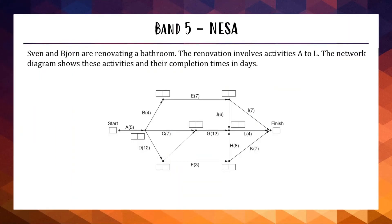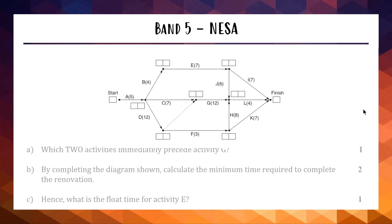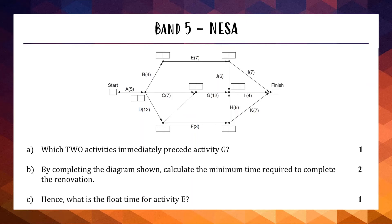We're up to the band 5 one. We've got Sven and Bjorn are renovating a bathroom. The renovation includes activities A to L and we've got a network diagram showing the completion times of all the activities. This is a critical path question with boxes for forward scanning and backward scanning. First question: which two activities immediately precede activity G? Activity G in our diagram is right here. We can see C leads into G, but what's this dotted line mean? This is a dummy line and this means that D is also an immediate predecessor for G. So the two activities that are right before G is the C and the D.